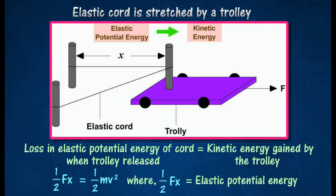1 over 2 Fx is the elastic potential energy stored in the cord when a force stretches the cord by X.